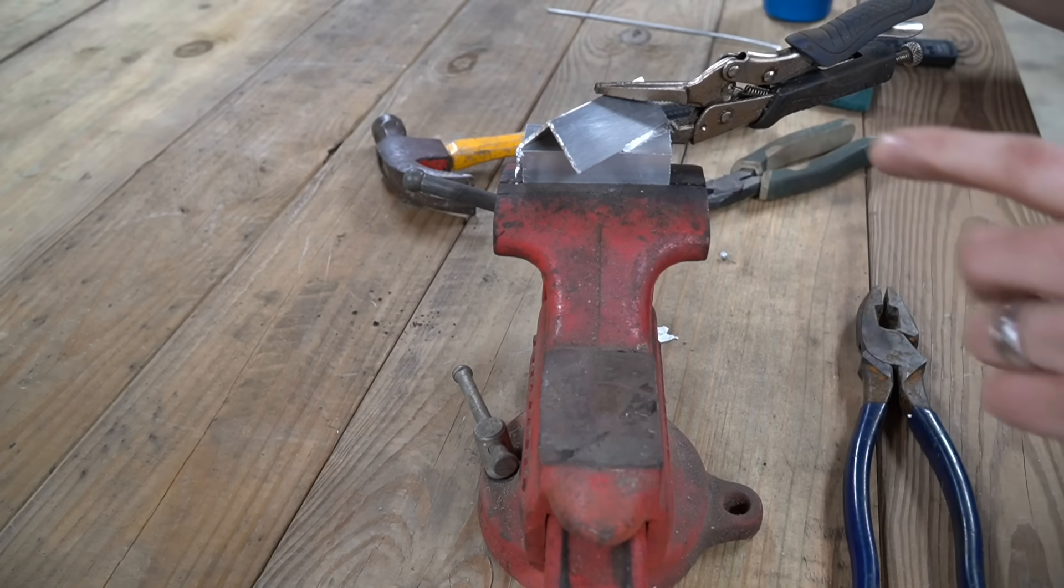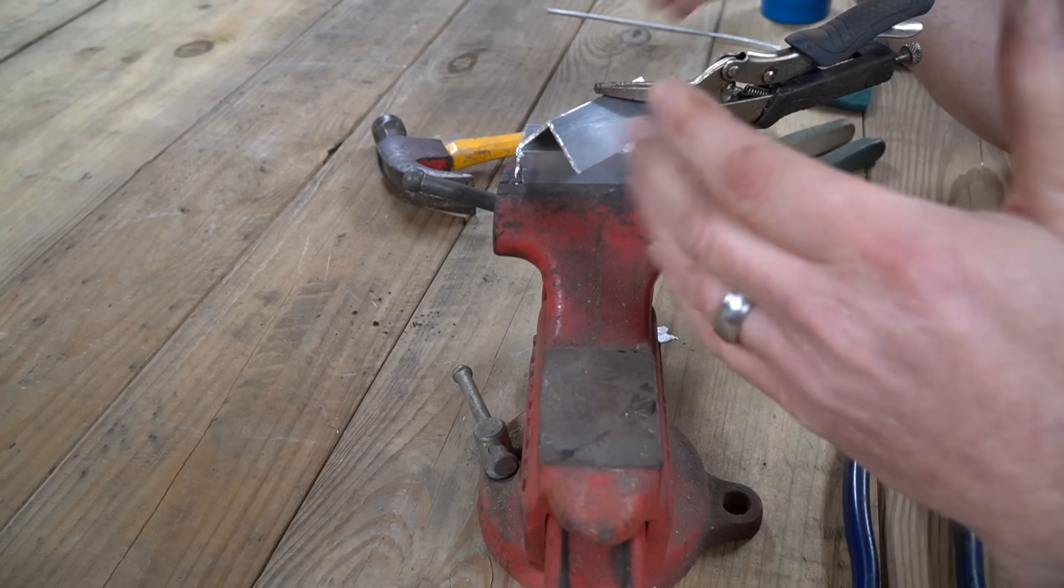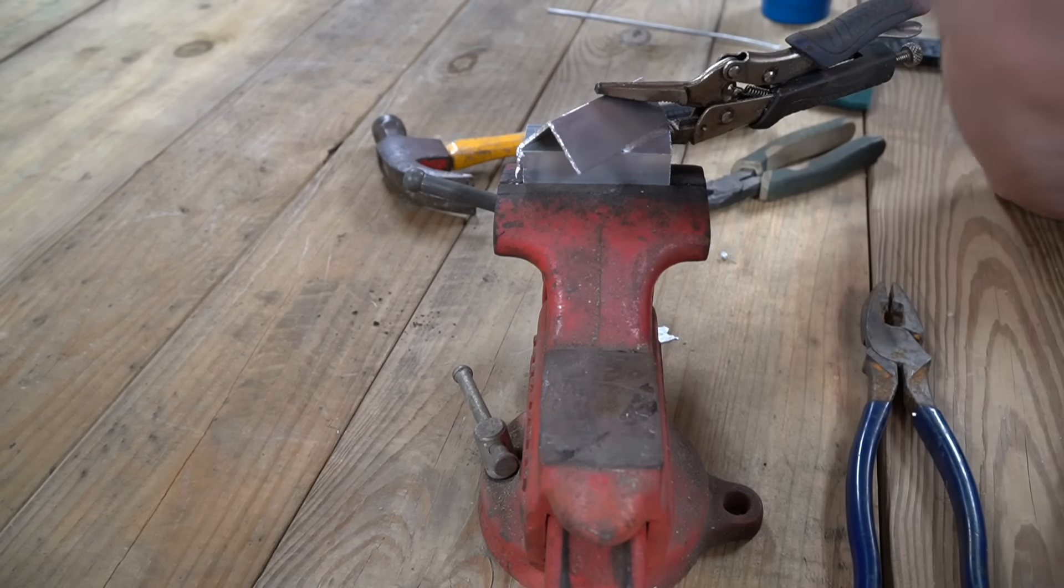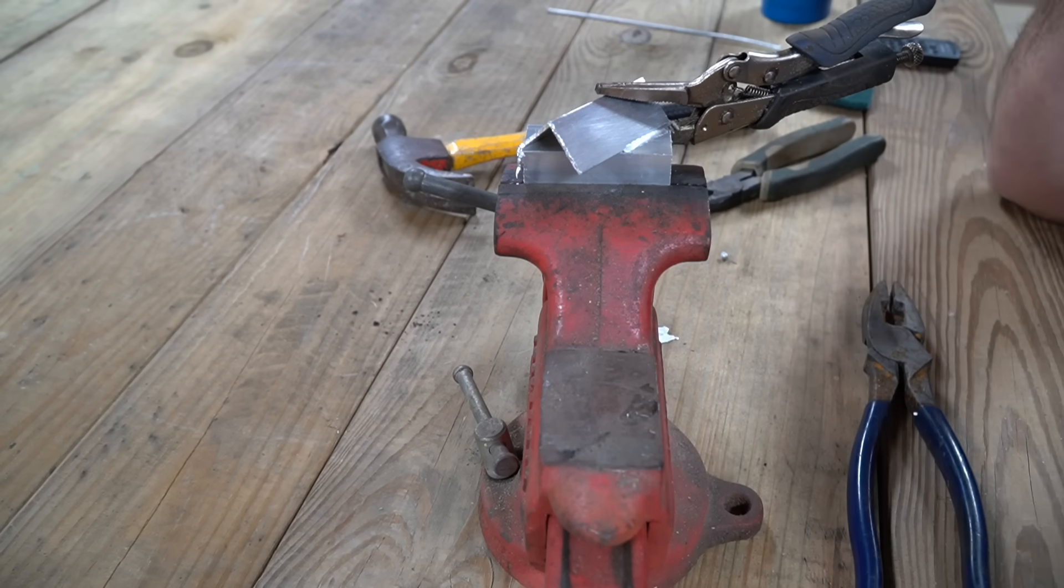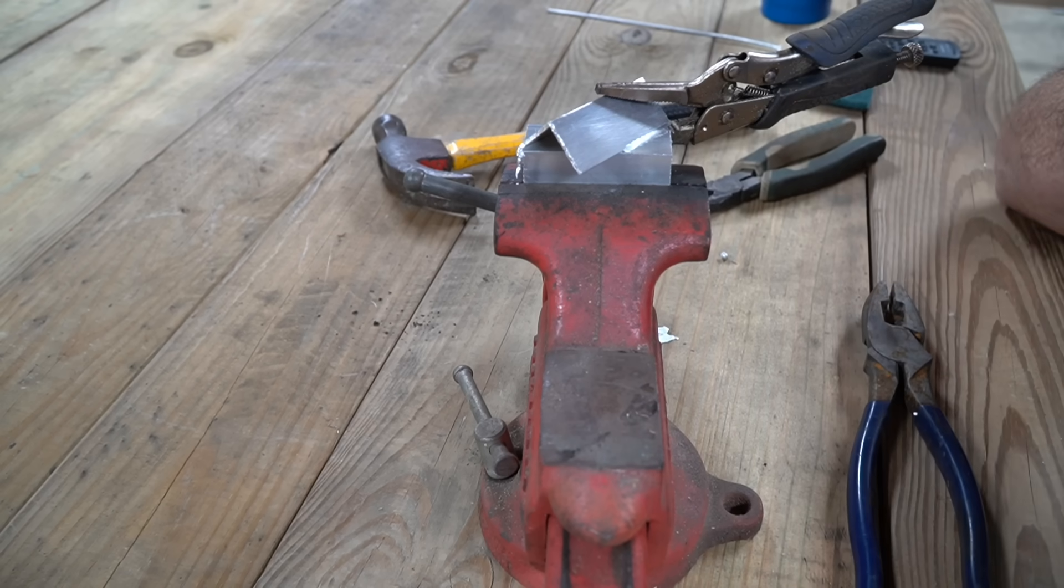And again, the tensile strength is stronger than the aluminum itself. So when you try to pull these apart, you end up wrecking the aluminum and your welds stay together. So if you've got a couple of pieces that need welded together, brazing might be your answer.